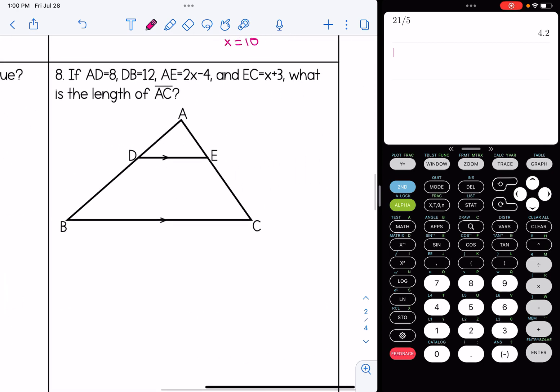For our last one in this video, AD is 8, DB is 12, AE is 2X minus 4, and EC is X plus 3. We're going to find the length of AC. On this, we see that it's set up correctly, the way we want it to. The side splitter is not labeled, but instead the sides it connects to are labeled. We're going to just set up our proportion. Only difference here is we have a little bit more algebra involved.